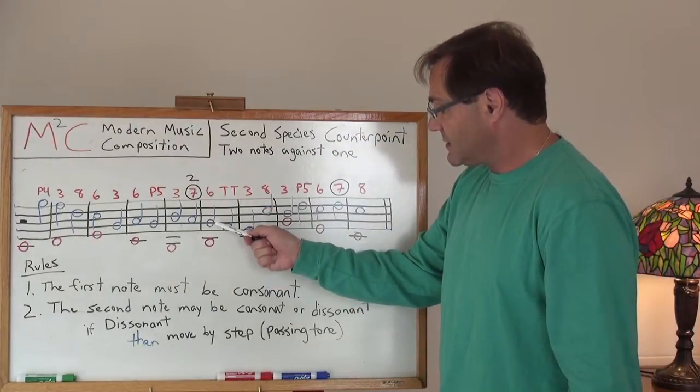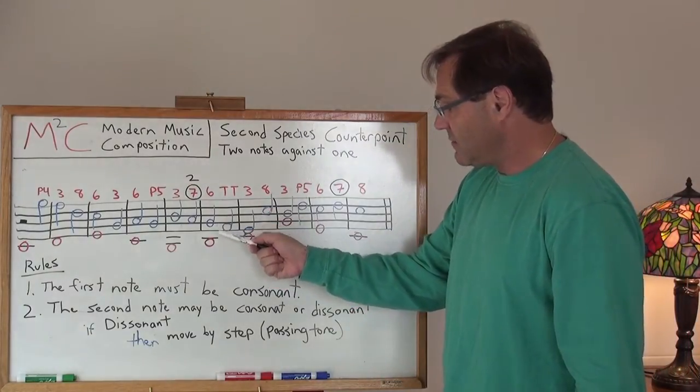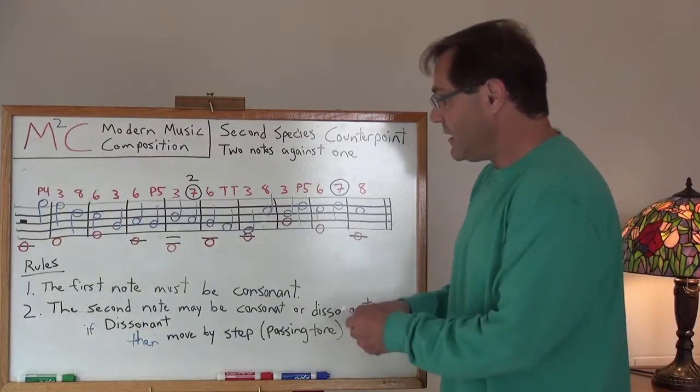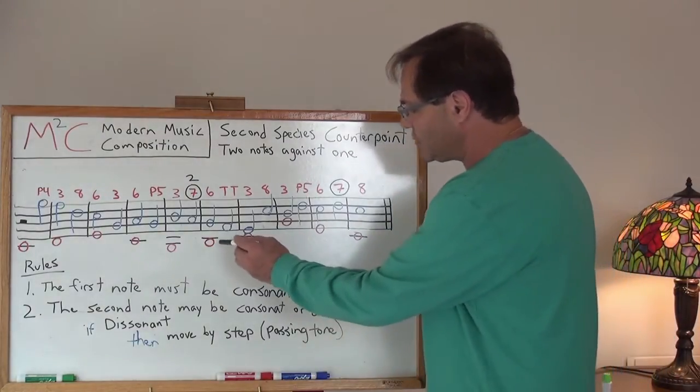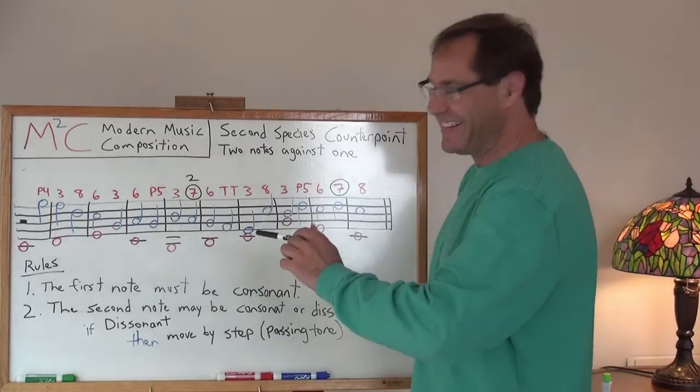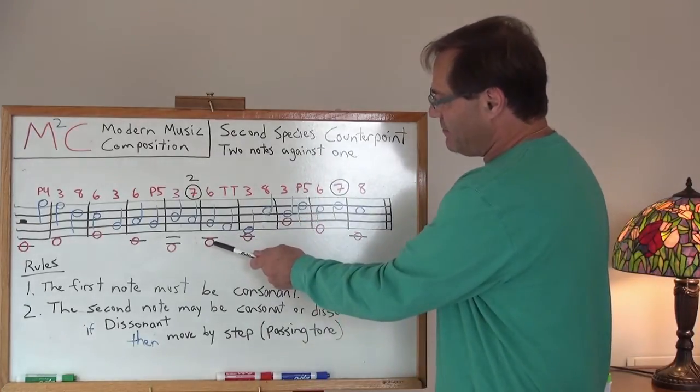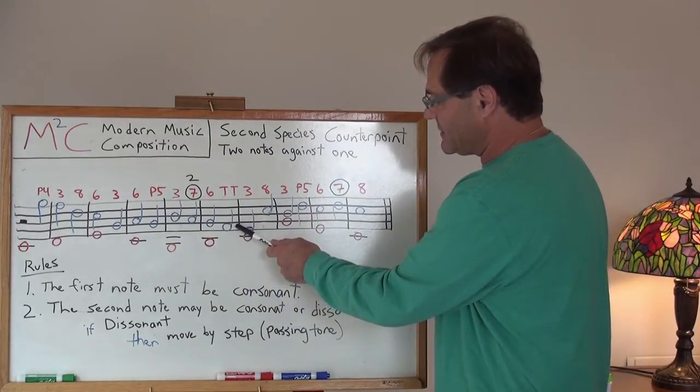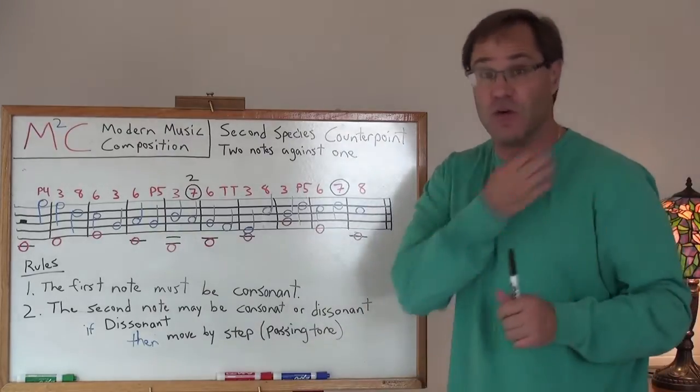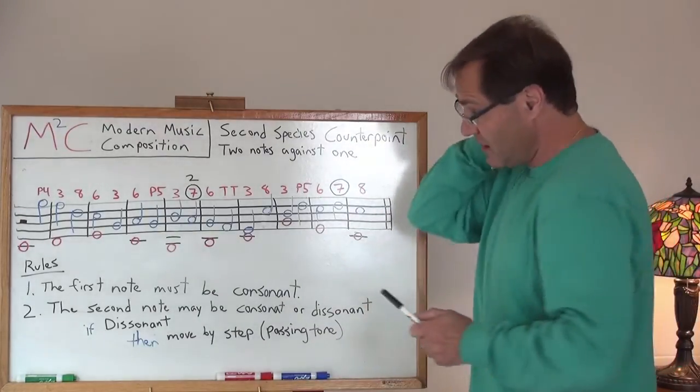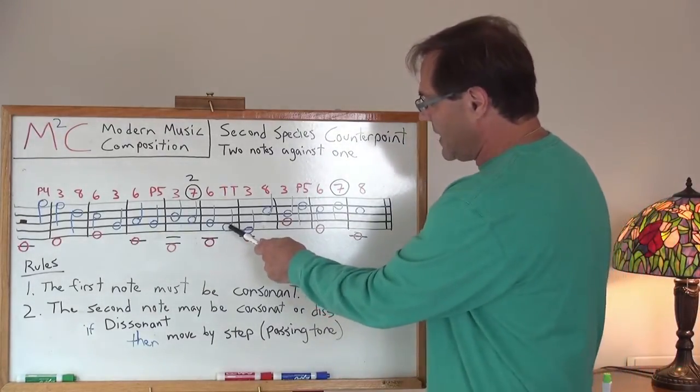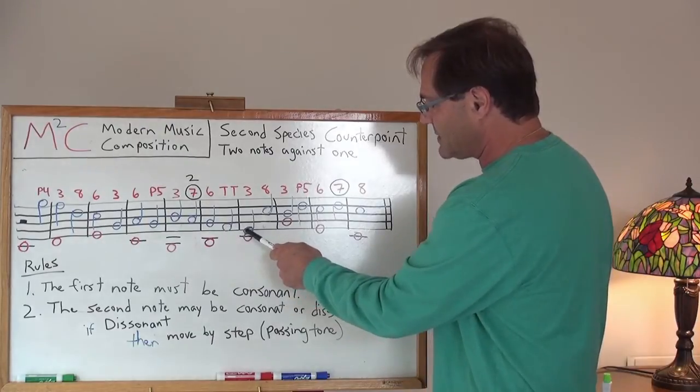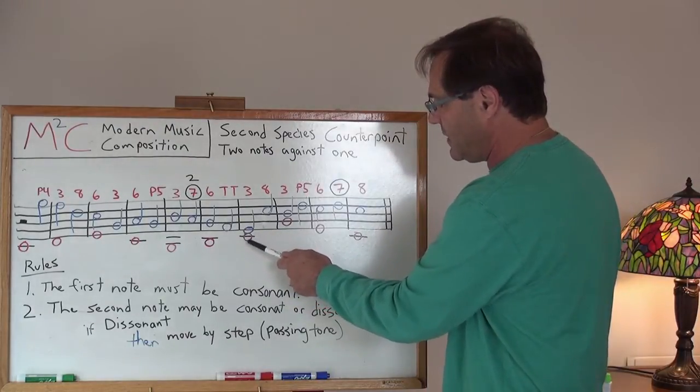So now I've got B against G which is a sixth. And then I make things really interesting by taking the B and hitting it against an F which is a tritone. Really dissonant actually. So I'm using this now tritone, this dissonance as a passing tone from G, F down to E.